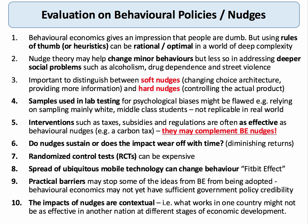Some argue that nudge theory is fine when we're trying to change relatively minor behaviours — although that's of course a value judgement — but perhaps less effective at addressing deeper societal problems such as alcoholism, drug dependence, and street violence across generations. It's important to distinguish between softer nudges — changing the choice architecture, changing the layout of a choice, providing better information — and hard nudges such as controlling the actual product through a ban or hard restriction.